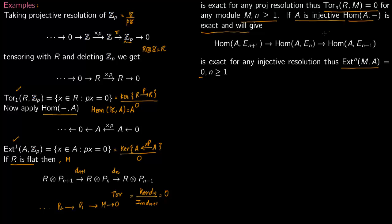So again, say this map is D_n, this map is D_(n+1), so kernel of D_n is equal to image of D_(n+1), and therefore Ext group will be 0 for all n greater or equal to 1.